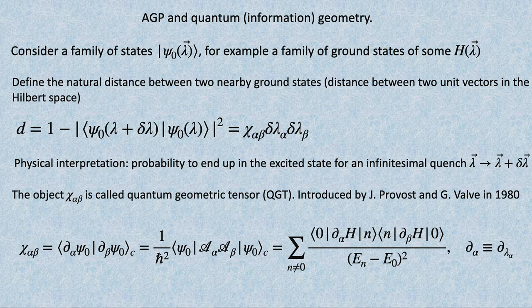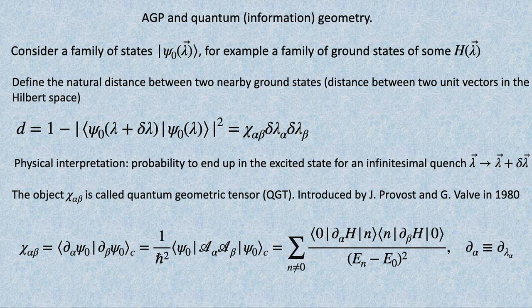The bottom line is that this fidelity—this geometric tensor—measures distance. It defines how quickly the wave function changes if I change the parameter. And this is nothing but the covariance of the adiabatic gauge potential.